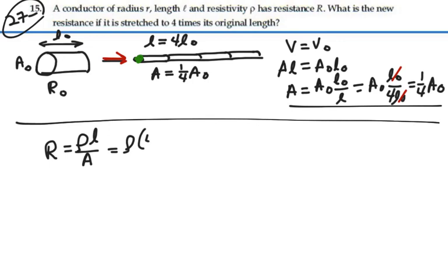The new length is four times the old length, four L-naught. The new area is one-fourth the old area. So this is going to be four times four, or sixteen.